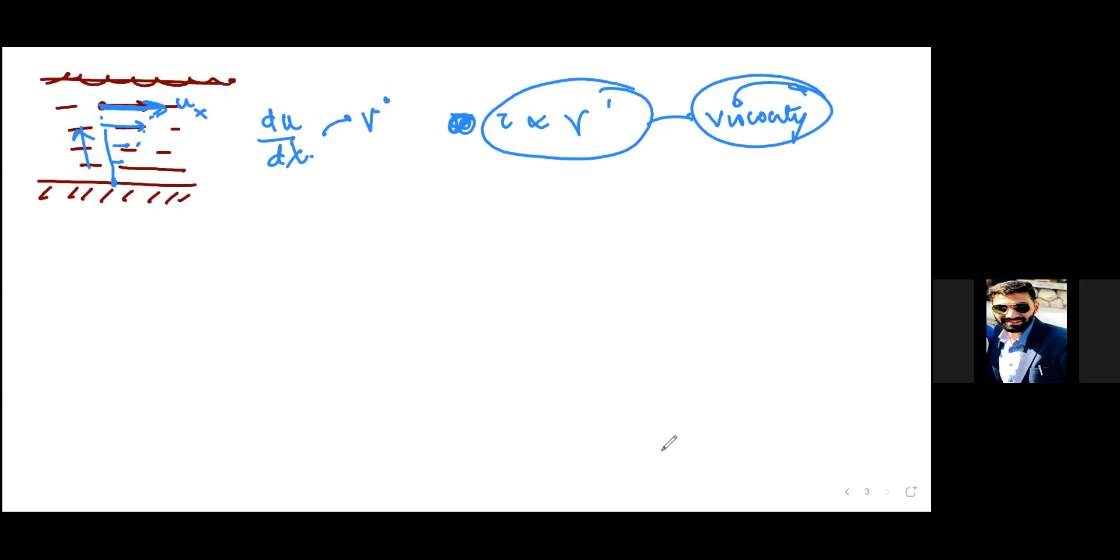That is our viscous force. Viscosity into del v by del x. So it is basically from there we can say that this τ, that is our shear stress, is directly proportional to v dash that is nothing but derivative of u with respect to x. All we are trying to say here is τ is directly proportional to γ' which is nothing but du by dx.